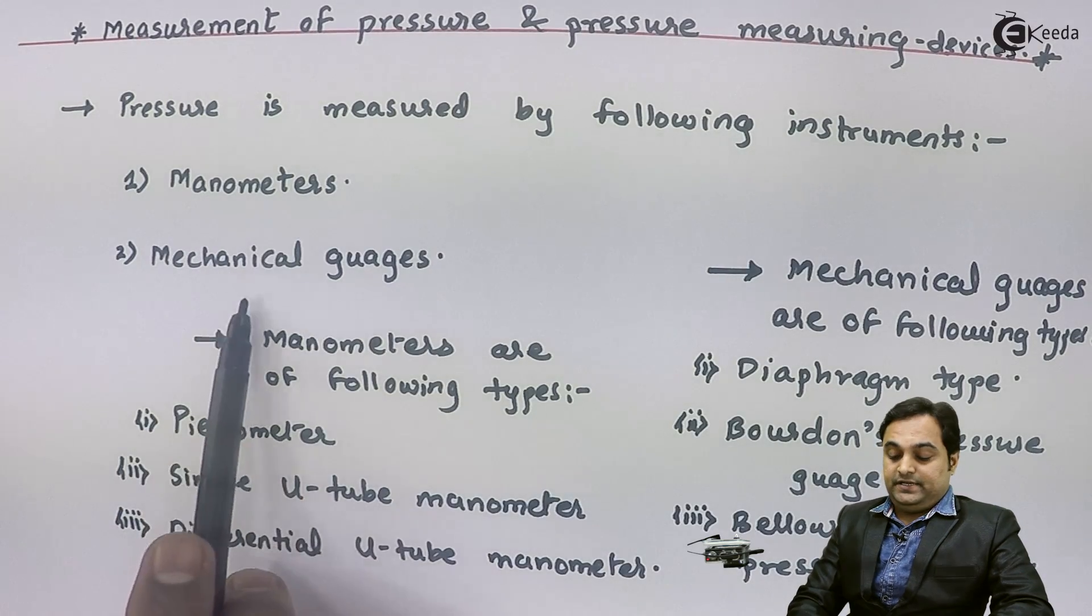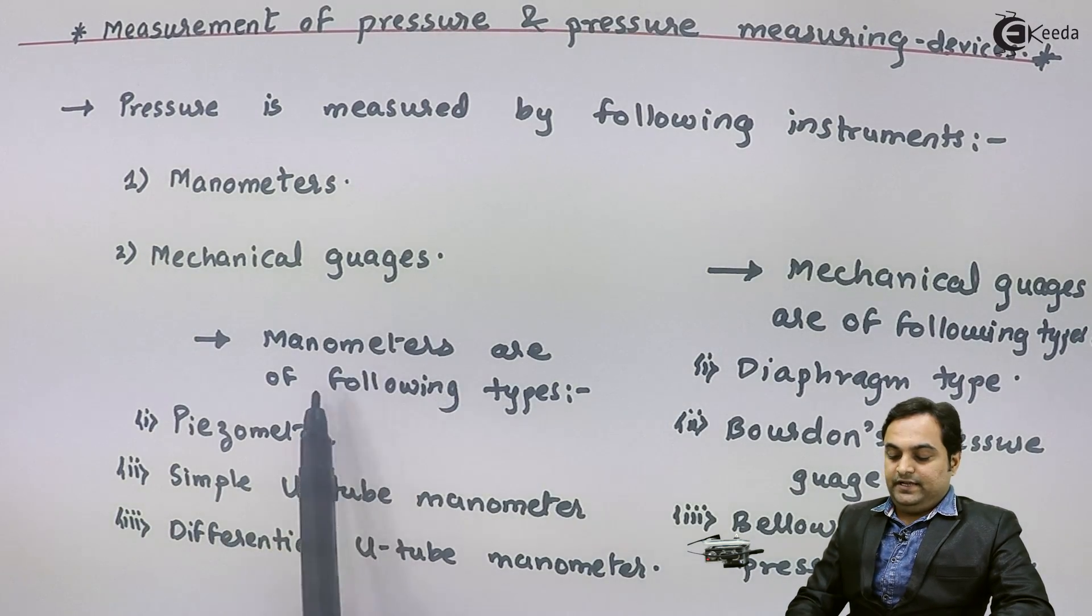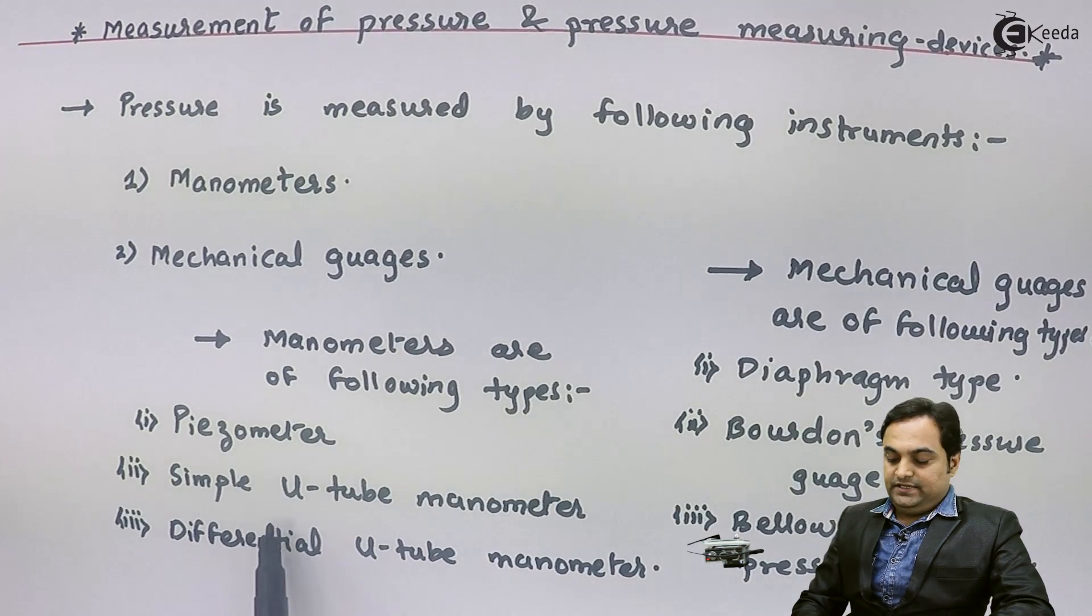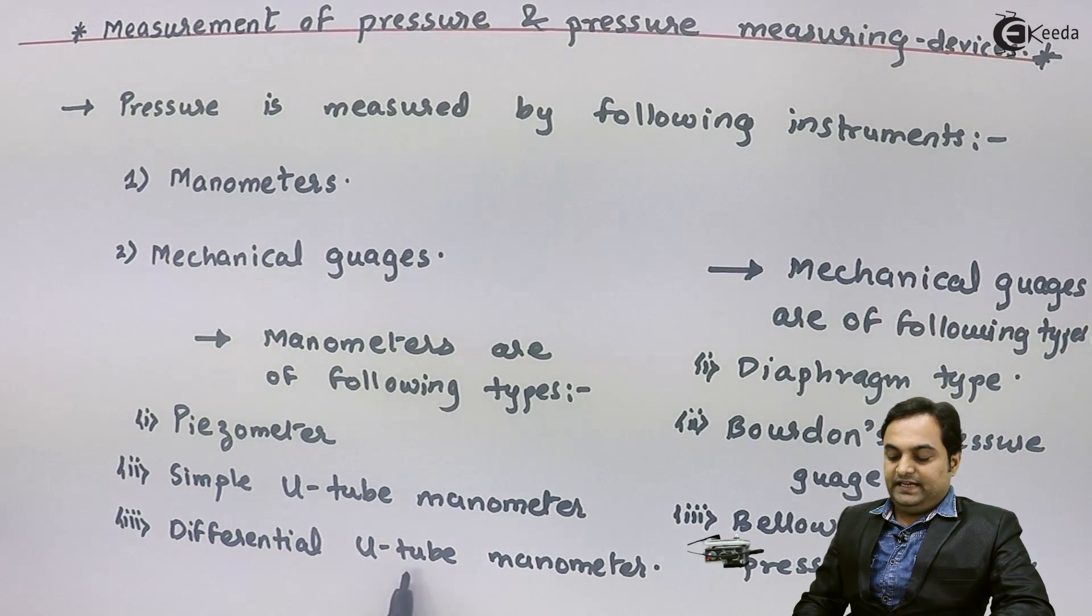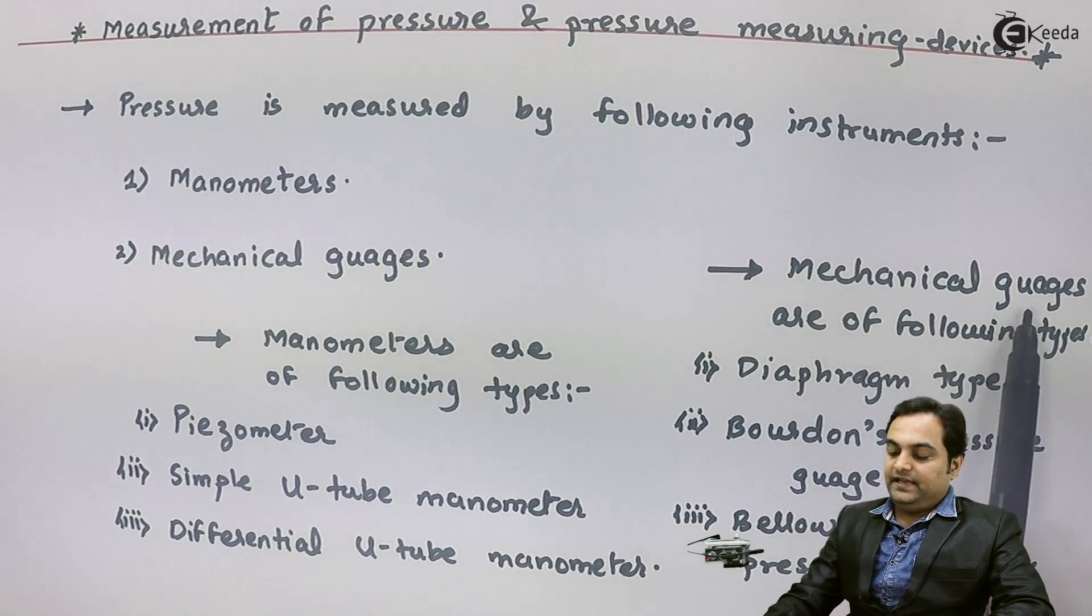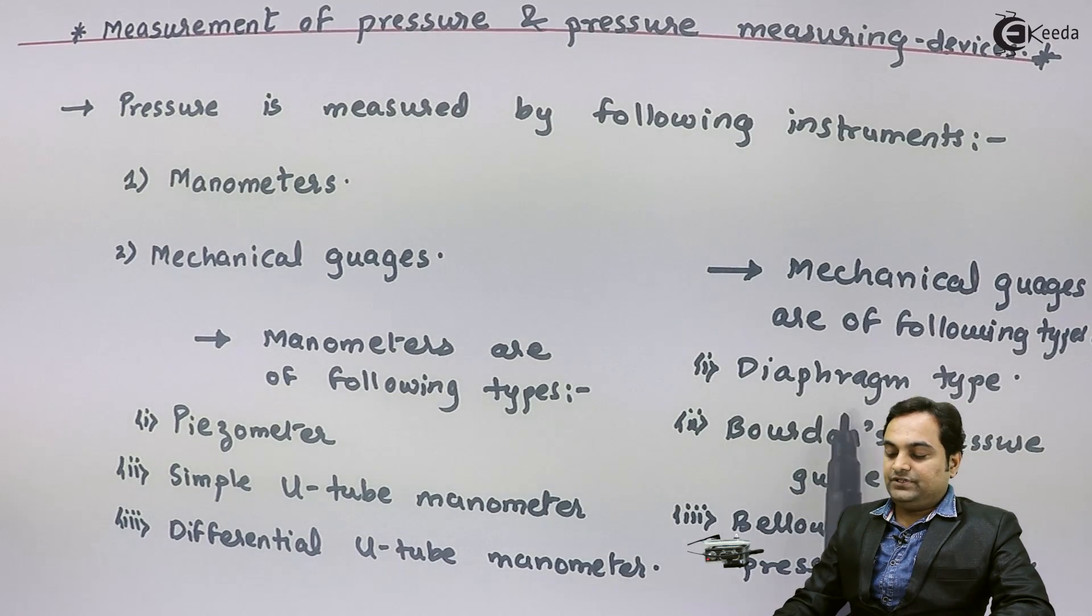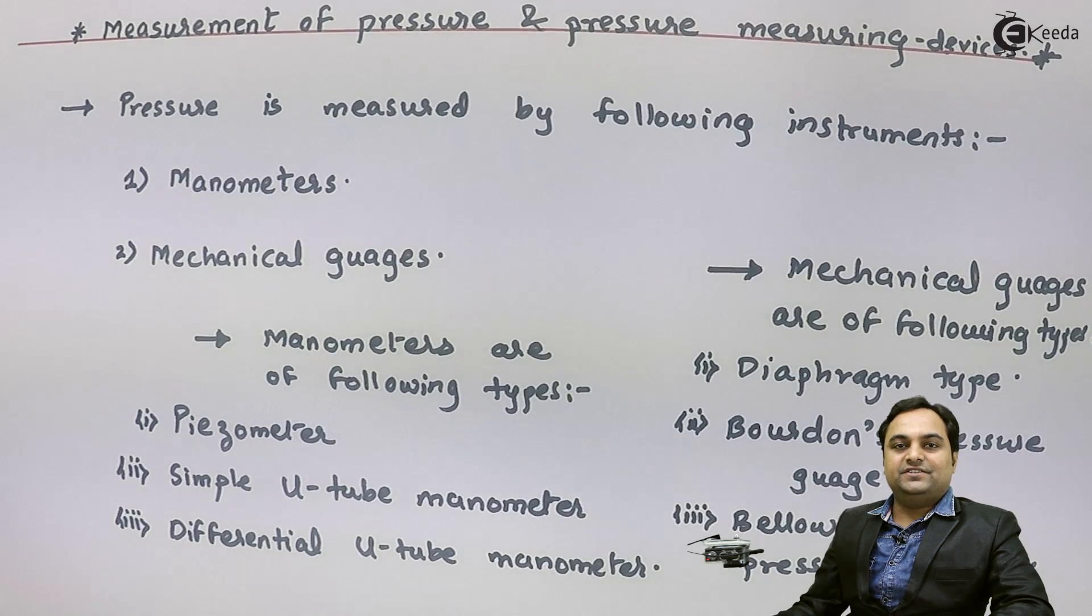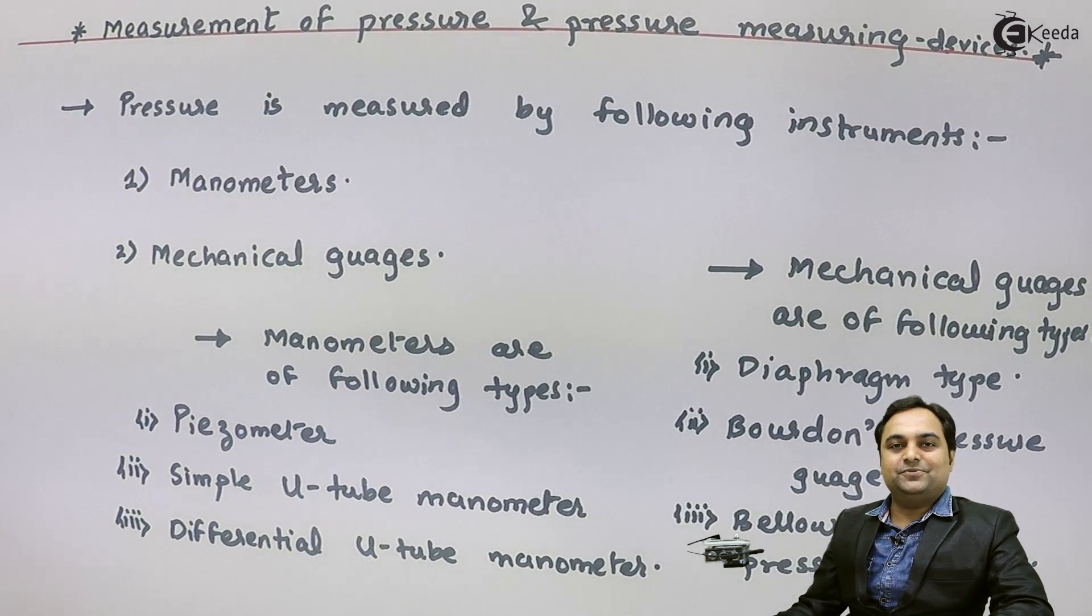So here I have mentioned two sets of measuring devices. First heading was manometers - piezometer, simple U-tube manometer, and we even have inverted U-tube manometer. Next, mechanical gauges - diaphragm type, Bourdon's pressure gauge, and bellows type pressure gauge. These were some commonly used pressure measuring devices. I hope in this video we have understood the types of pressure measuring instruments.